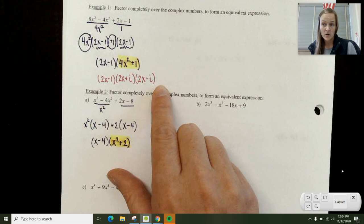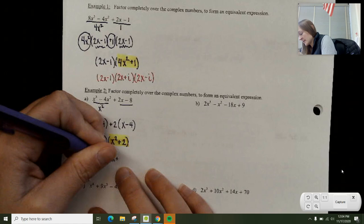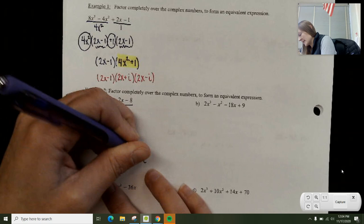Here, notice the square root of 1 was just 1, so it was 1i and 1i. Here, the square root of x² is x. So I've got x + i√2 and x - i√2.